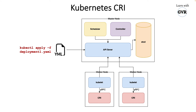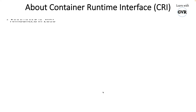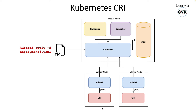Where does CRI fit in the Kubernetes architecture? We know the API server — when you run kubectl apply for a deployment with 50 pods, it hits etcd, the controller handles it, the scheduler assigns pods to worker nodes. Instead of Docker, kubelet now talks to CRI using gRPC communication. API server to kubelet uses HTTP REST, but internally kubelet to CRI uses gRPC.